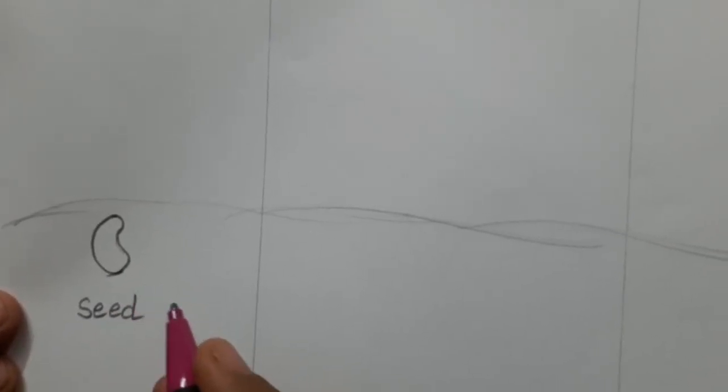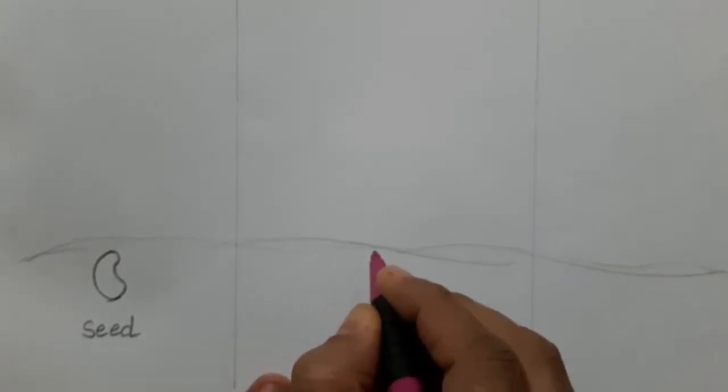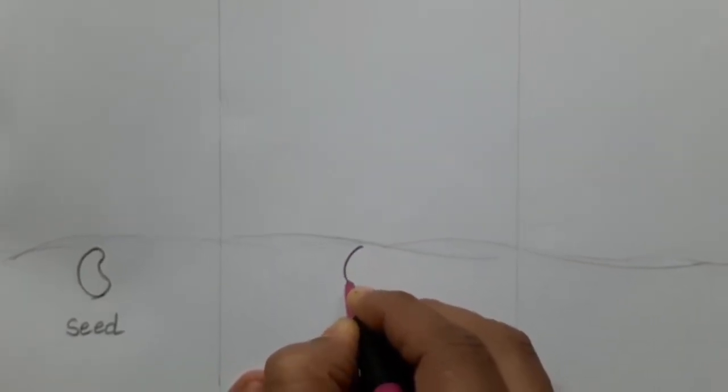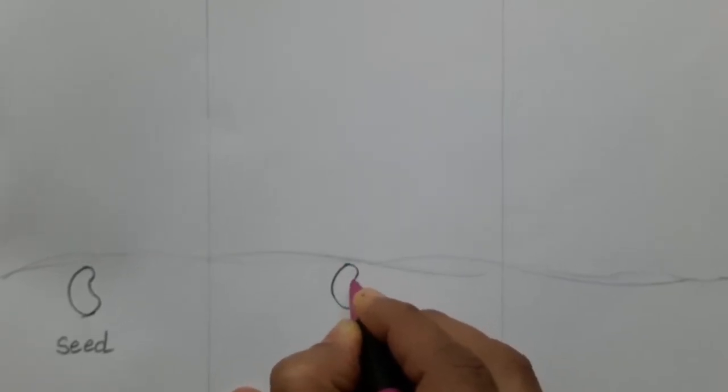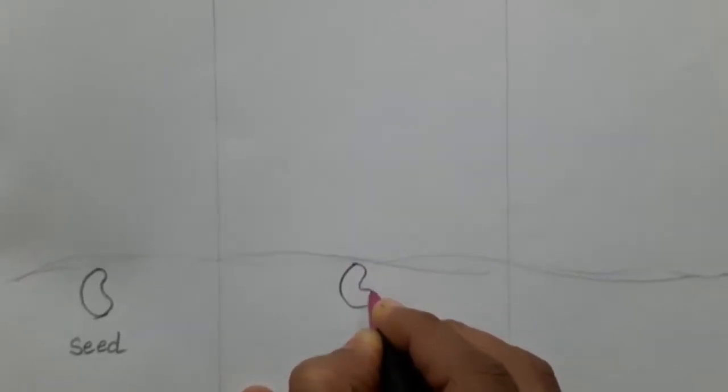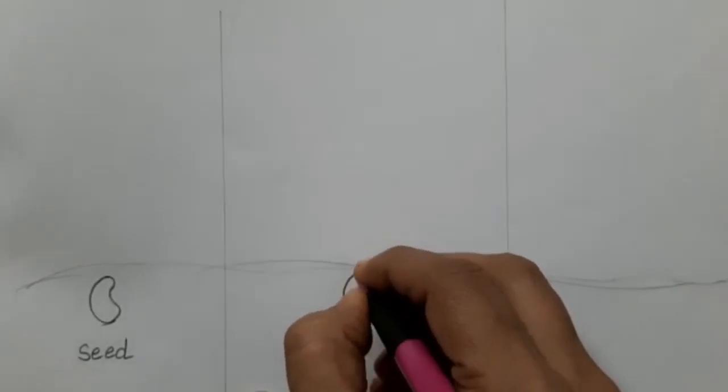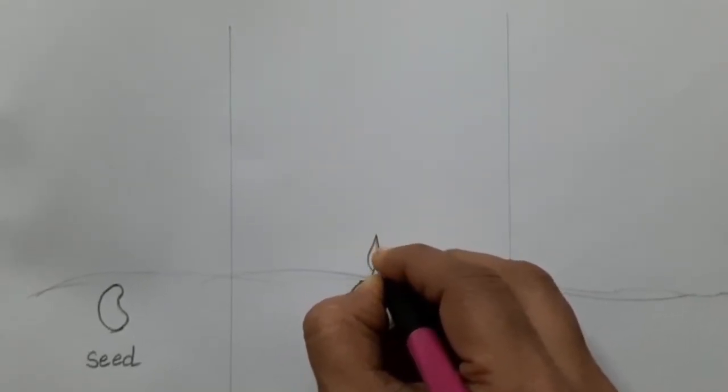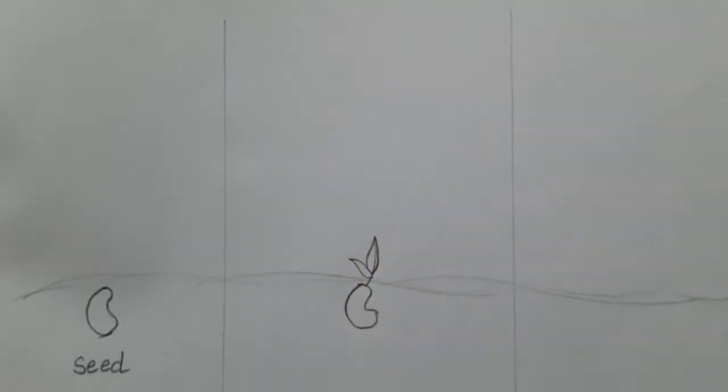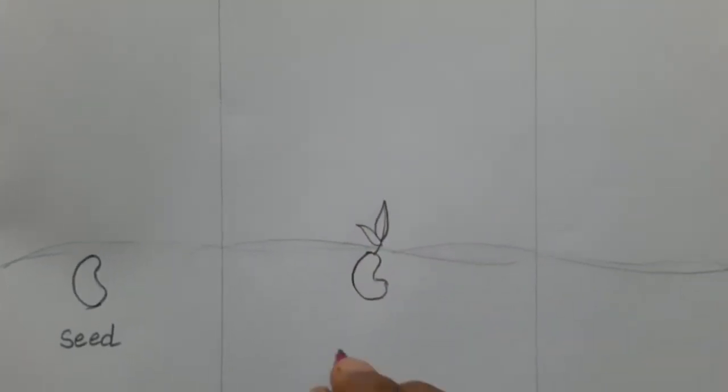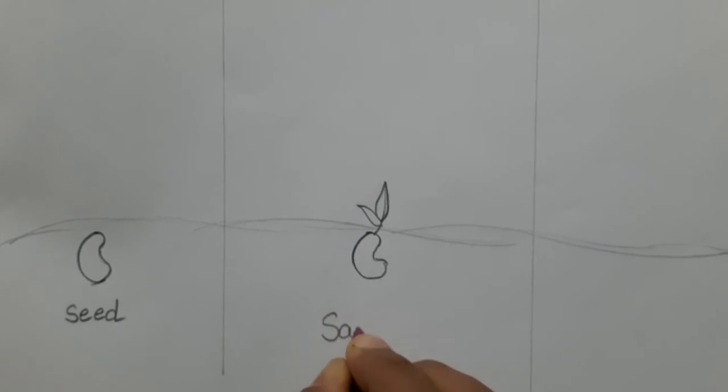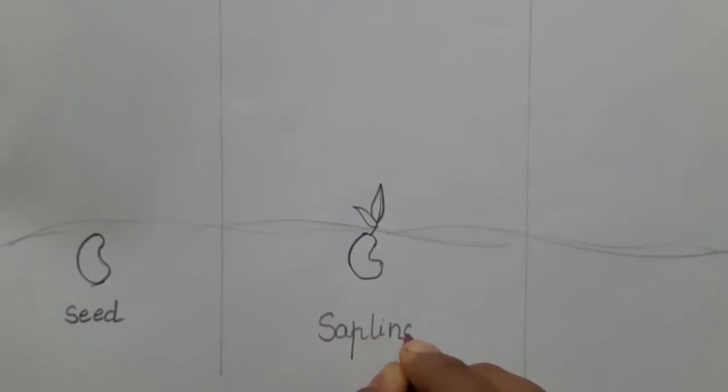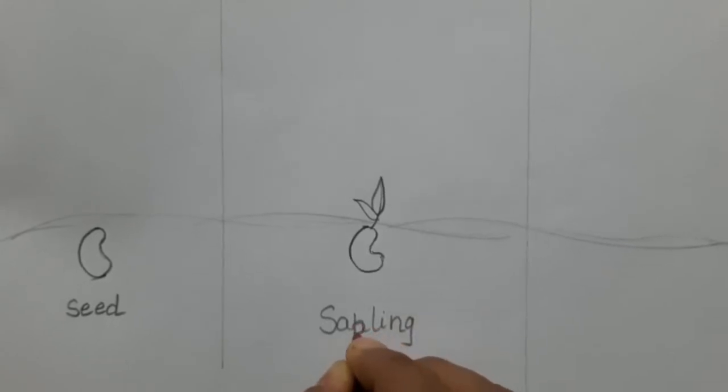And after that, we will draw the stage of a sapling. Like this. And here we are going to write 'sapling.' A baby plant is known as a sapling.